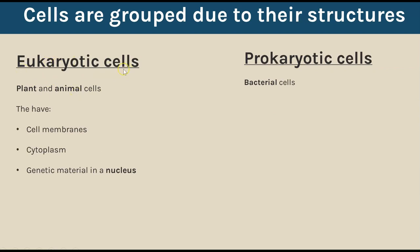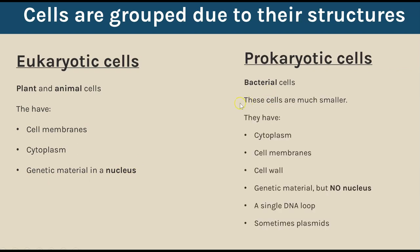Some of the key structures in animal and plant cells, our eukaryotic cells, are: cell membranes, cytoplasm, and crucially their genetic material - the DNA - is found in the nucleus. If we compare this to a prokaryotic cell like bacteria, first of all they are much much smaller in size. Bacteria cells are much smaller than plant and animal cells. They do have similarities though - they both have cytoplasm and both have cell membranes. Only plant cells have a cell wall, whereas all prokaryotic cells will have a cell wall.